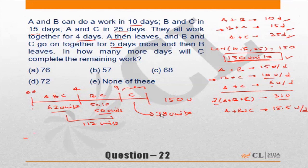But at what rate does C work? We know that A+B+C do 15.5 units of work per day. We also know that A+B do 15 units of work per day. So if A+B do 15 units and A+B+C do 15.5 units, the difference between the two is C. C will do 0.5 units of work per day.